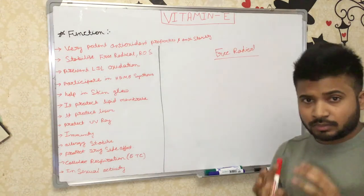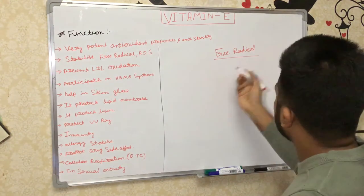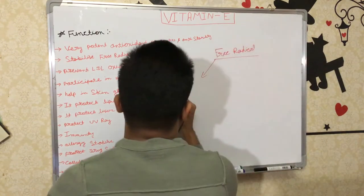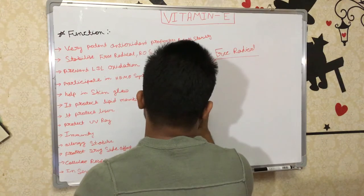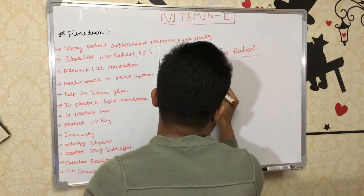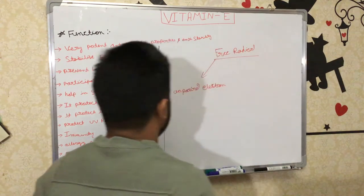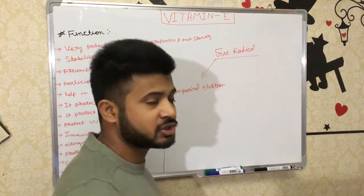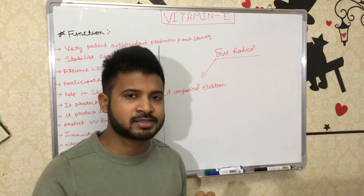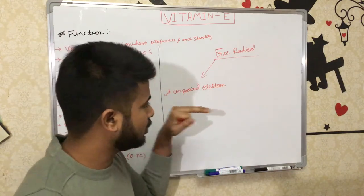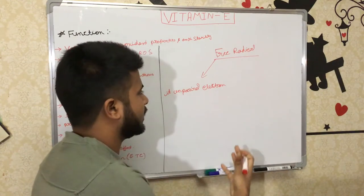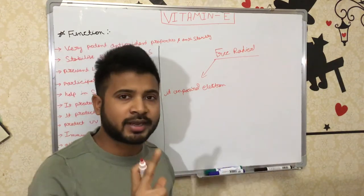Now let's discuss how free radicals damage our body. Chemically, a free radical has an unpaired electron. Because it's unpaired, it is unstable and tries to pair with another electron for stabilization. Whenever it stabilizes it can exist in a normal way. So due to the unpaired electron, it tries to bind to something else — it has one electron and needs one more to form a pair for stabilization.